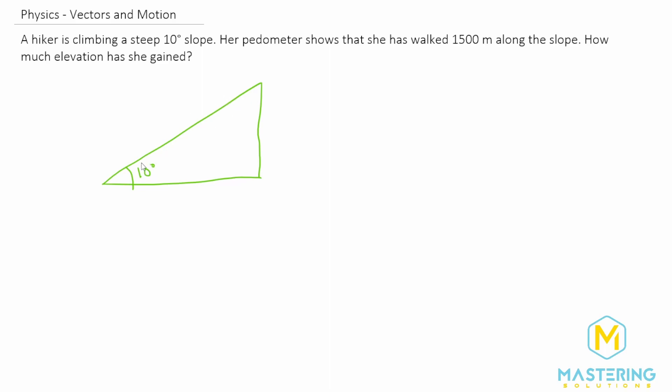Her pedometer shows that she walked 1500 meters along the slope. And they want to know how much elevation she gained. So from here to here is going to be this distance right there.